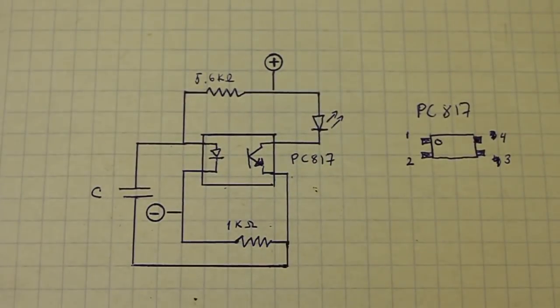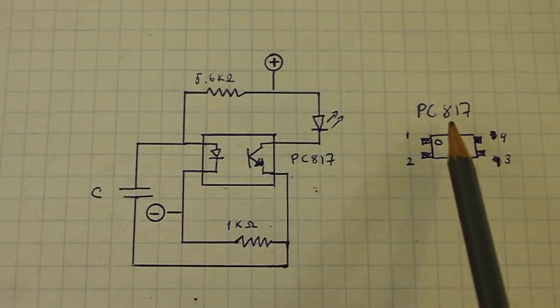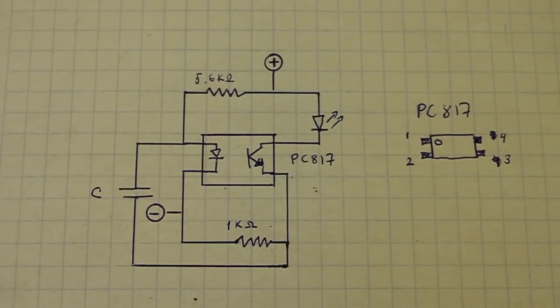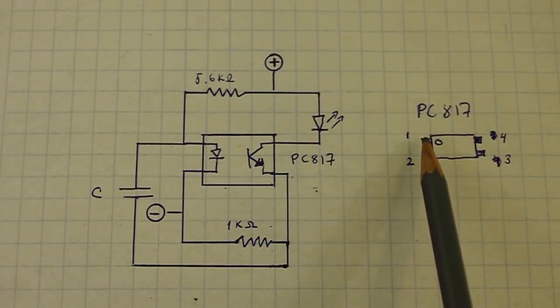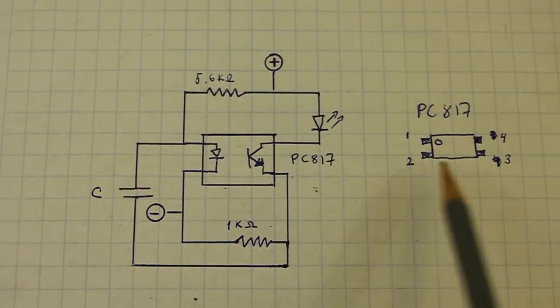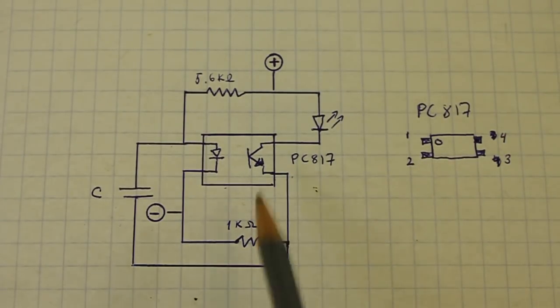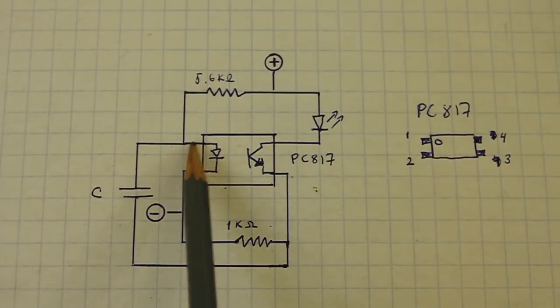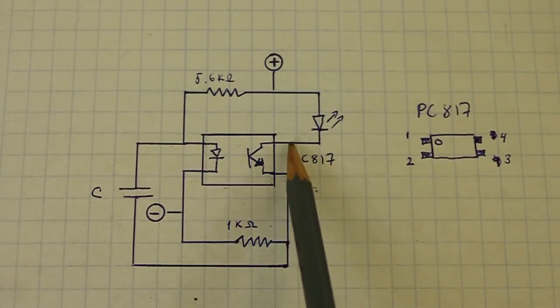Here we can see the schematic of the oscillator. I am using a PC817 which has the following pinout. Here, where you have the mark is pin number 1. Then we have 2, 3 and 4, and is the same as in the diagram 1, 2, 3 and 4.